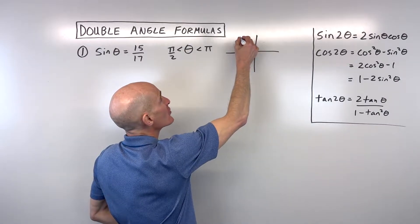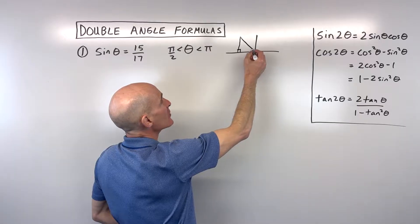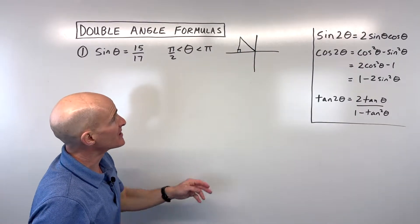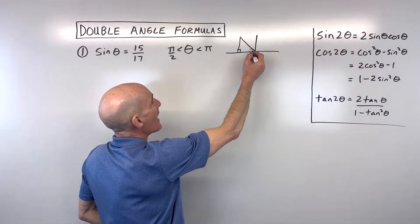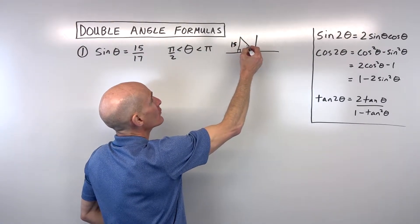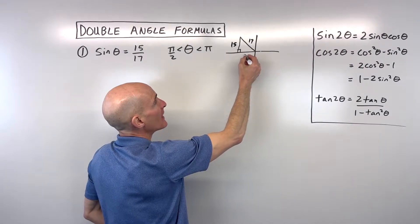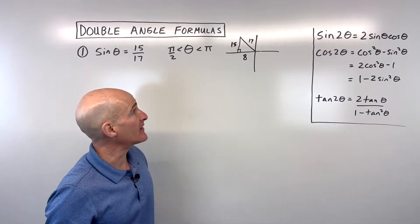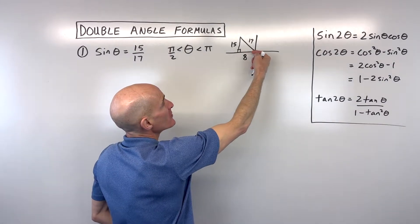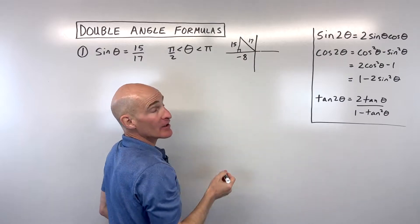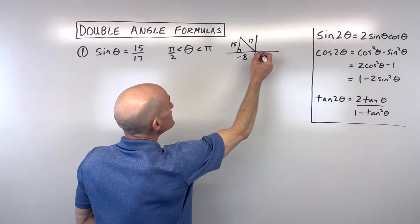So you want to draw a triangle, drop your perpendicular to the x-axis. This is your central angle here near the origin, and we know that sine is opposite over hypotenuse. If we do the Pythagorean theorem, we get 8 for this missing side. This is an 8, 15, 17 Pythagorean triple, but notice we're going to the left, so this is going to be negative 8.